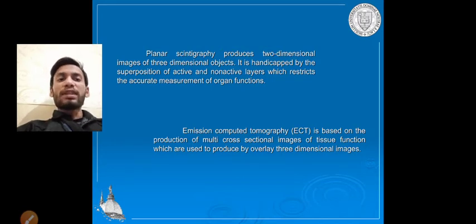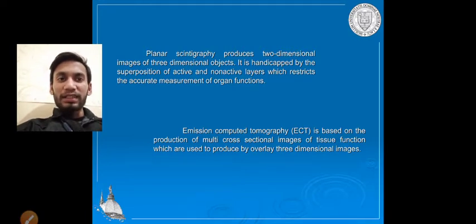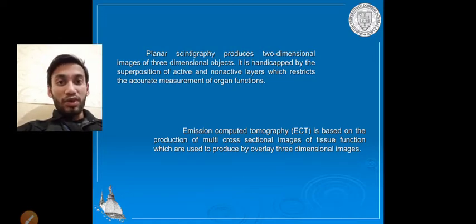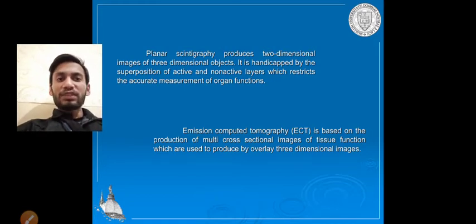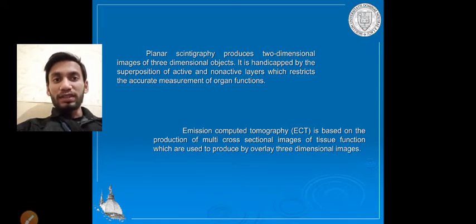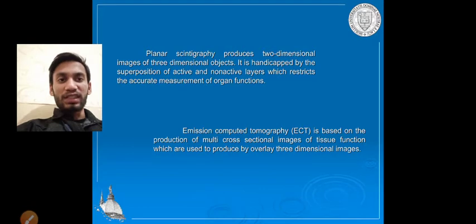Emission computed tomography releases positrons or photons — that is why it is called emission computed tomography. It is based on the production of multi cross-sectional images taken from a wide angle of view to see tissue functions in the images.